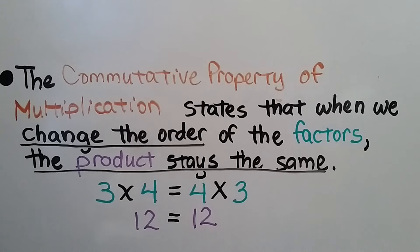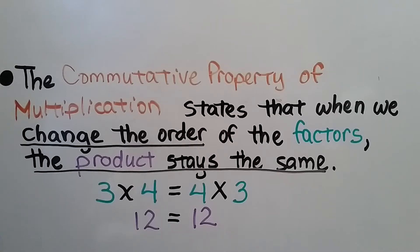The commutative property of multiplication states that when we change the order of the factors, the product stays the same. So 3 times 4 is equal to 4 times 3. 12 is equal to 12.